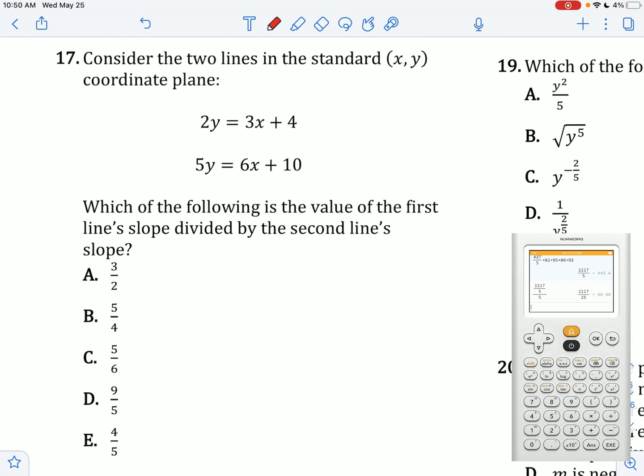Considering the two lines below, which of the following is the value of the first line slope divided by the second line slope? The first line slope is going to be 3 over 2. The second line slope is going to be 6 over 5. So 3 over 2 divided by 6 over 5 is the same thing as 3 over 2 times 5 over 6. This turns into a 2, so we get 5 over 4.